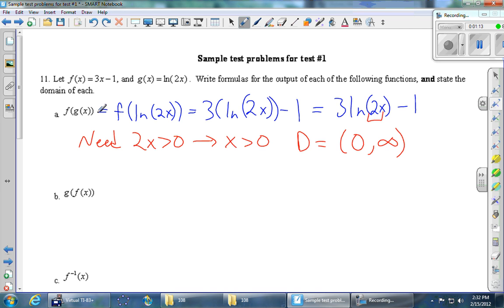g of f of x. Again, work from the inside to the outside. So this is g of 3x minus 1. g is a function which takes ln of 2 times whatever you give it. Normally it's an x. In this case, it's the thing in the first parentheses here, 3x minus 1. So cleaning this up a little bit or distributing, we get ln of 6x minus 2.